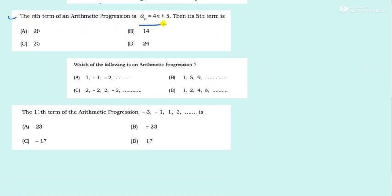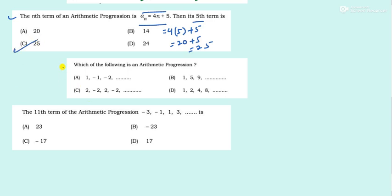Next question: The nth term of an AP is given; find its fifth term. Put 5 in place of n: 20 plus 5 is 25. The answer is 25.